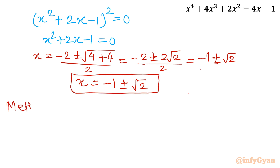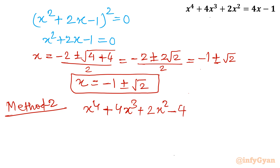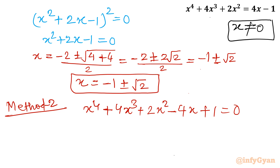Now method number 2 — this is the method of reciprocal equations. Our equation is x⁴ plus 4x³ plus 2x² minus 4x plus 1 equals 0. This is a quartic equation with symmetrical coefficients. Since x cannot equal 0 in this equation, I will divide both sides by x².